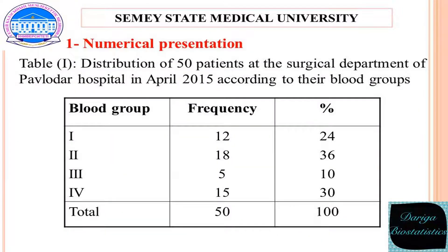Example of numerical presentation of data. The table illustrates the number of patients at the surgical department of Poldar Hospital in April 2015, according to their blood groups. It is noticeable that the number of patients who have the second blood group are higher than others — 36% out of 50 — while the number of patients with the third blood group is the smallest, only 10% out of 50.